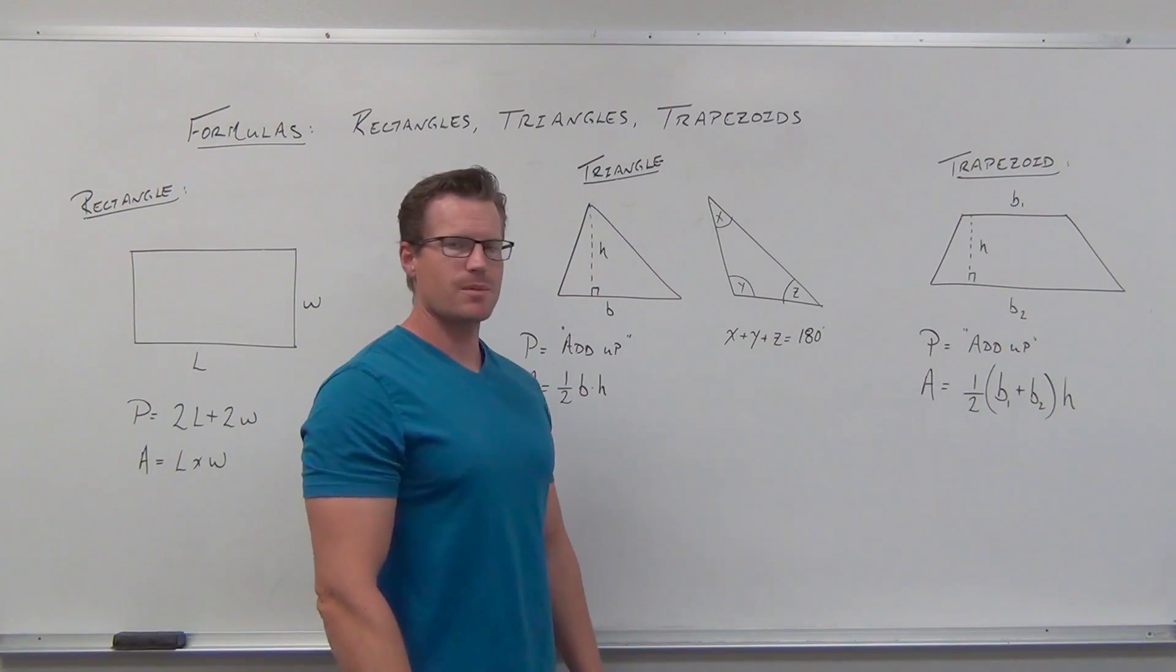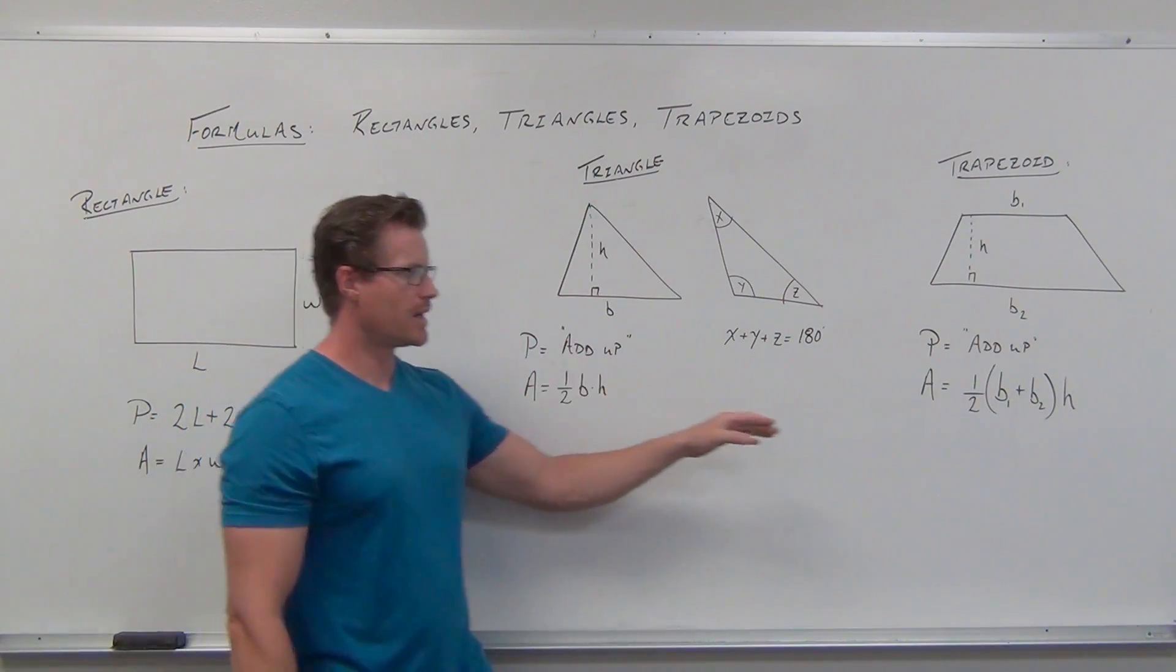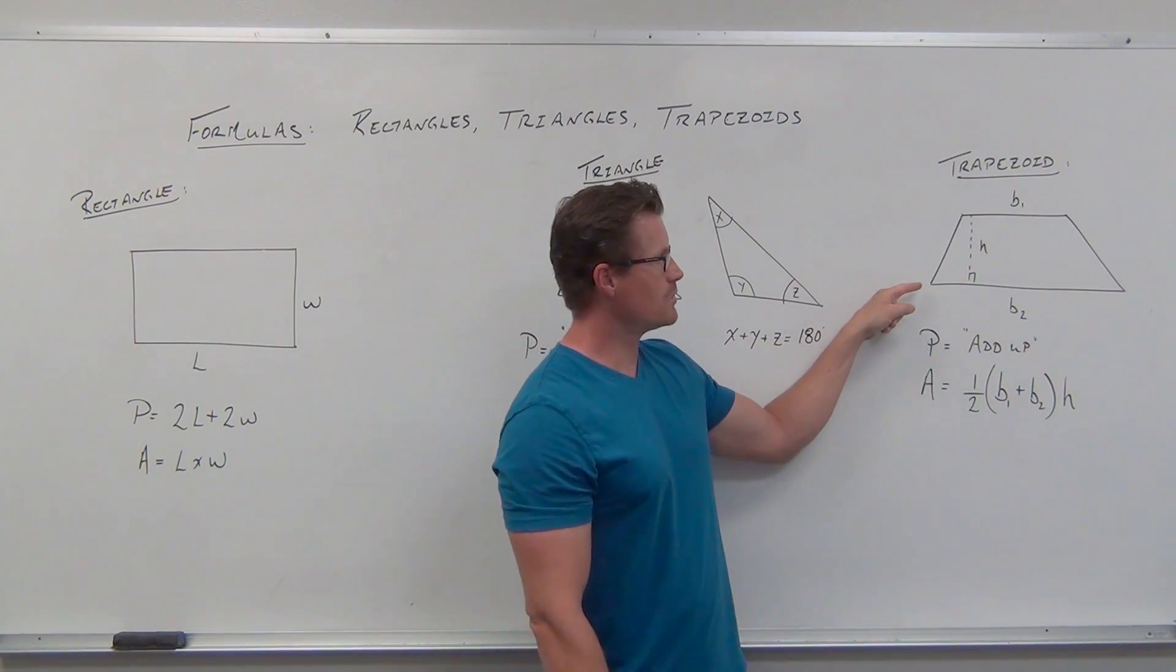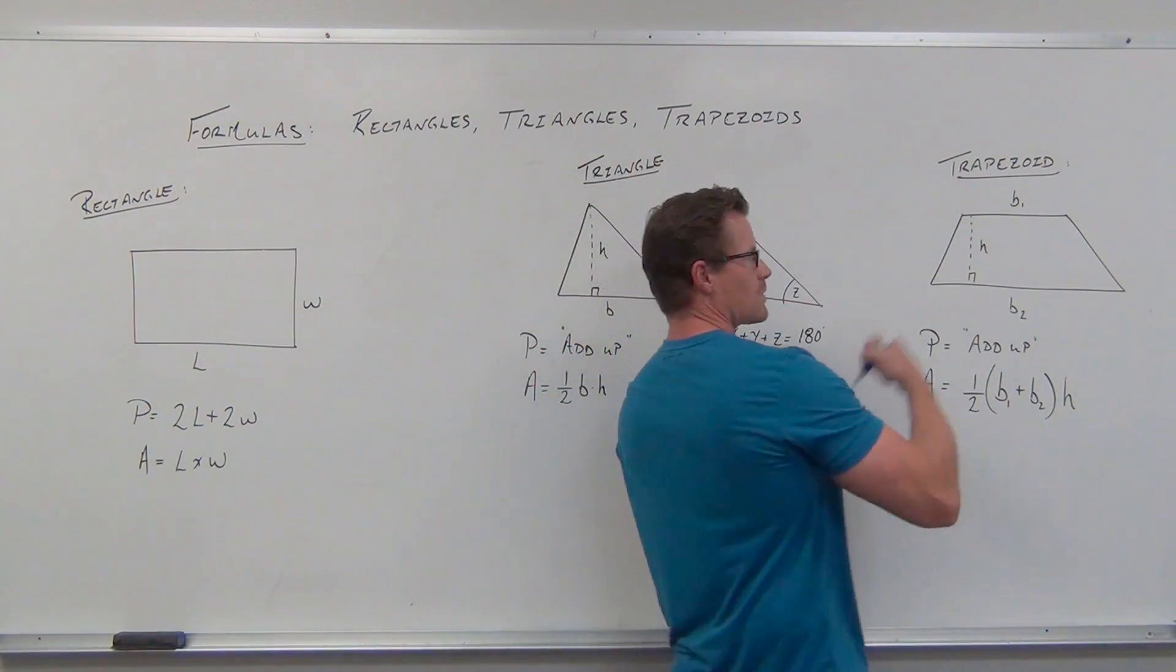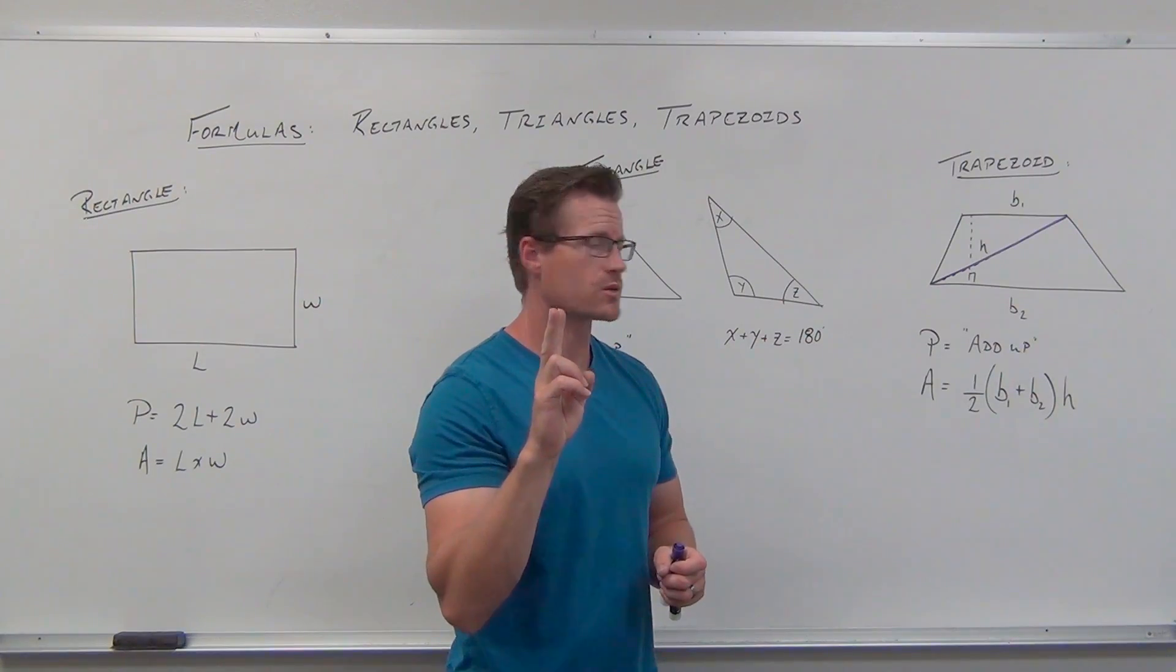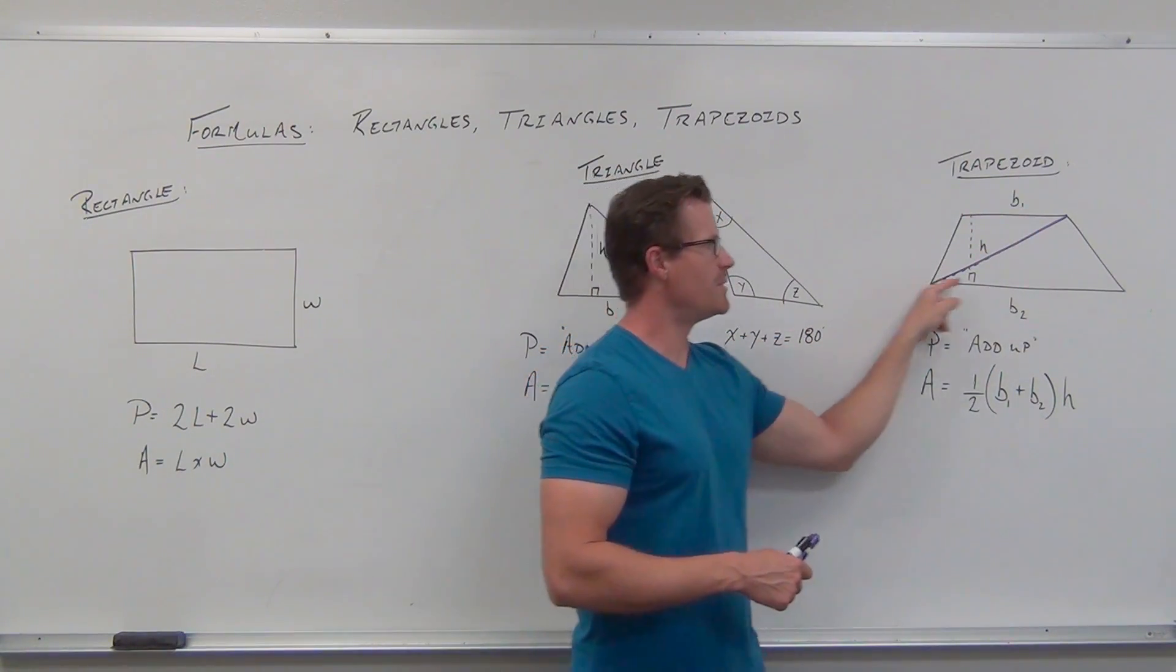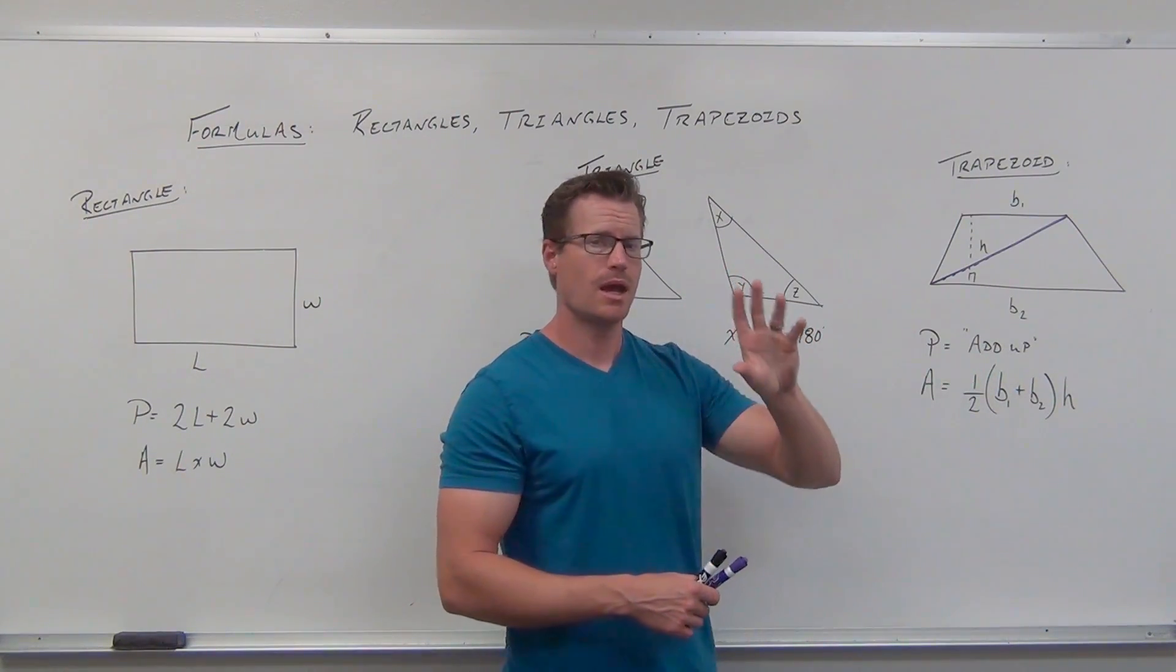The last figure is the trapezoid. A trapezoid is a truncated or cut-off triangle, so the formula is similar. The area is (b₁ + b₂)h/2. We basically cut off a triangle, or you can think of it as two triangles. If you cut the trapezoid here, you have two triangles with the same height. Base 1 times height divided by 2, plus base 2 times height divided by 2. You can factor out the 1/2 and the height, giving you (b₁ + b₂)h/2.